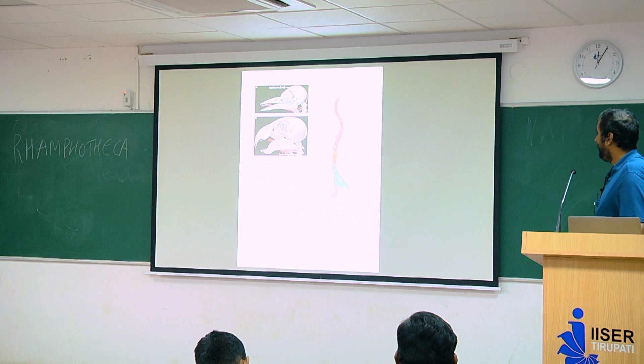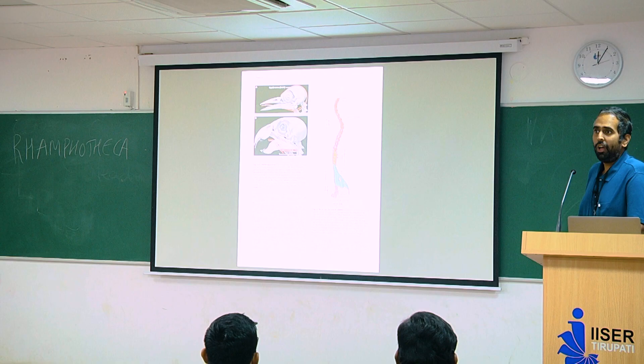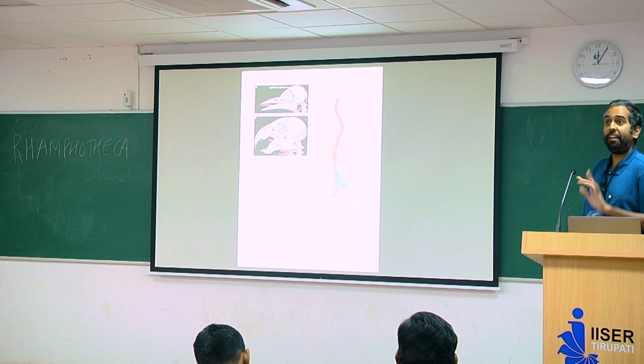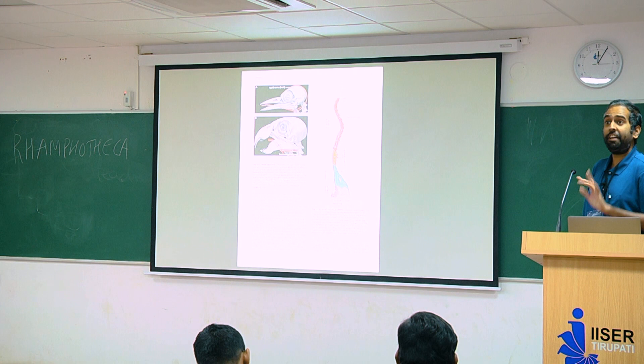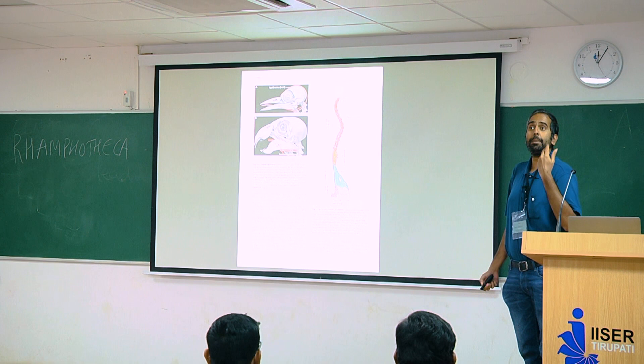Birds also have tongues. Tongues are supported by bones called the hyoid apparatus. The hyoid apparatus is different between bird groups — it's a very useful classification tool. The hyoid supports different kinds of tongues depending on what birds need to do.